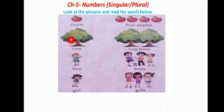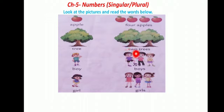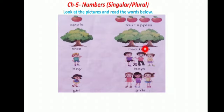Next, the picture is of a tree. Only one tree is there, so you write the spelling T-R-E-E, tree. And in front of that there are two trees, so you write T-R-E-E-S, trees. After the spelling of tree, you add S, so the plural form of tree becomes 'trees'.